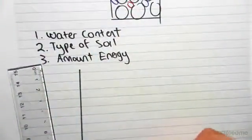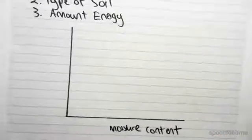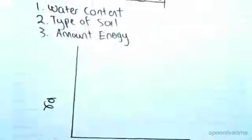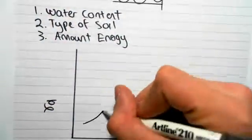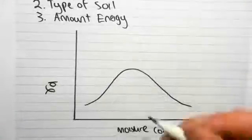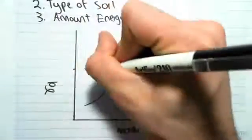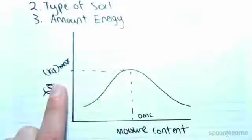If we were to plot, so this is moisture content against gamma dry, it's very important to gamma dry. What's going to happen is that we're going to get a curve which looks something like this. What it's saying is that at some particular point, we're going to get an optimum moisture content which will give us a maximum dry unit weight, which is what we want. We want the soil to be compact.